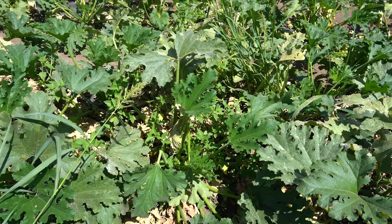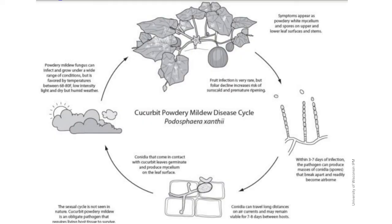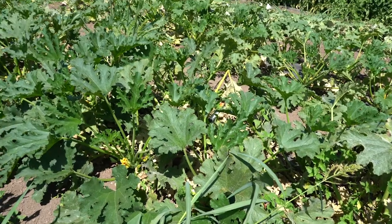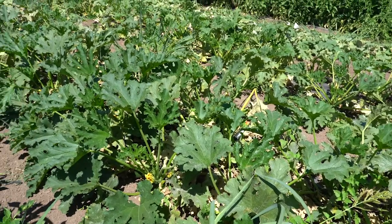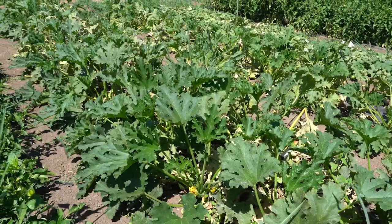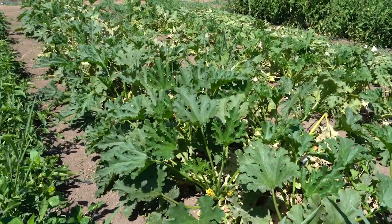Powdery mildew overwinters in fruiting structures on plant debris. When temperatures warm in the late spring, a secondary spore called the conidia forms and blows onto leaf tissue to cause infection.